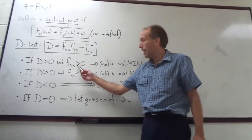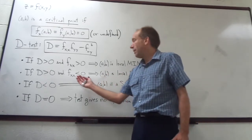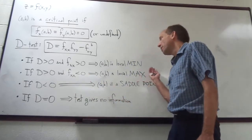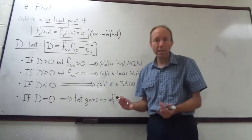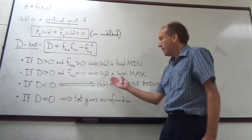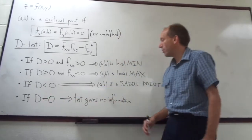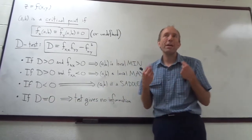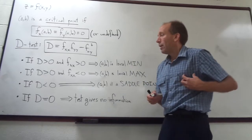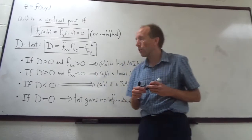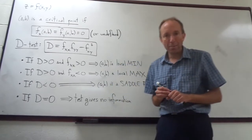Here are the outcomes of the D-test: if D is greater than zero and f_xx is greater than zero, then the point (a, b) is a local minimum. If instead f_xx is less than zero, then (a, b) is a local maximum. If D is less than zero, then regardless of other facts, we have a saddle point. If D equals zero, the test gives no information and we have to think of another way to decide whether (a, b) is a maximum, minimum, or saddle point — I have a couple of examples like that in the homework.